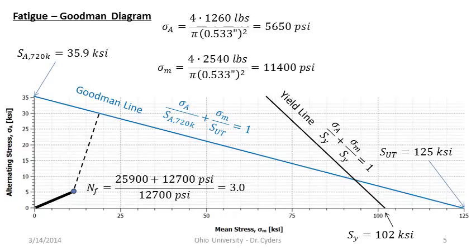This is the worst case: the distance from zero to our operating point, plus the minimum distance from there to the envelope. This gives the most conservative approach, regardless of the relationship between mean and alternating stress — the most conservative common usage of the modified Goodman diagram.